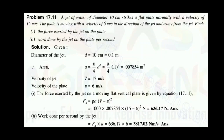Force exerted by the jet on the vertical moving plate in the direction of the jet: Fx = ρA(V − u)². Work done = Fx × u. Kinetic energy = ½ρAv³. Efficiency = work done per second divided by kinetic energy supplied by the jet per second.